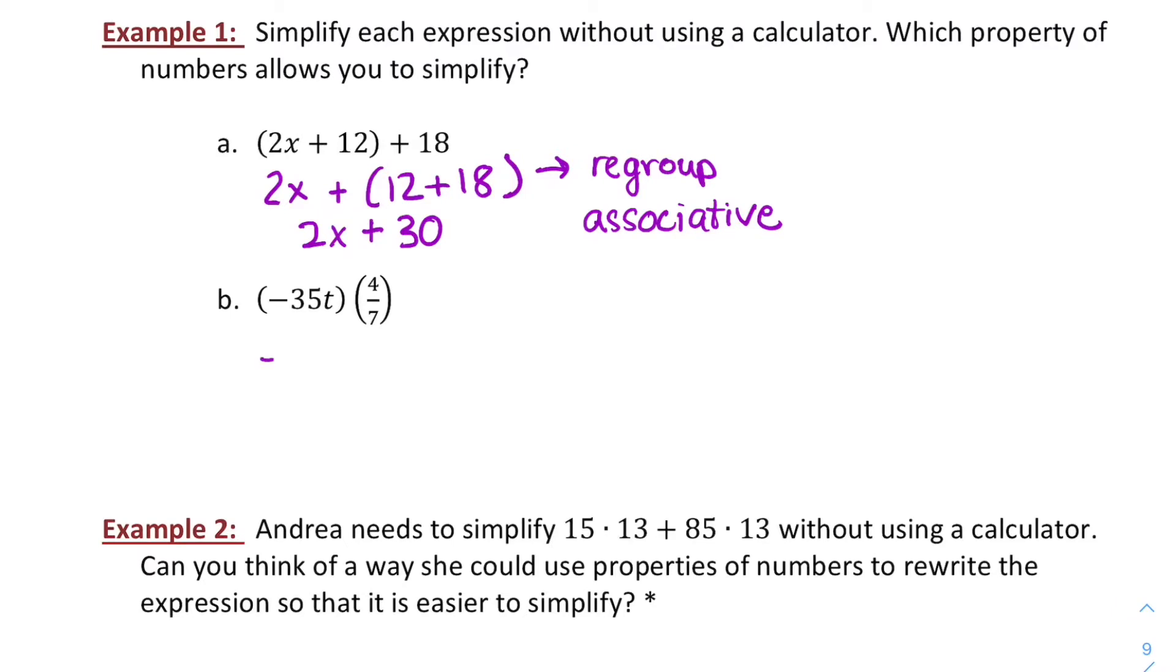If you look at B, I'd like to multiply those together. Really, I'm multiplying negative 35 times 4 sevenths is what I'll be able to simplify. So I kind of reordered there and regrouped. So reordering was my commutative property and then regrouping was my associative property.